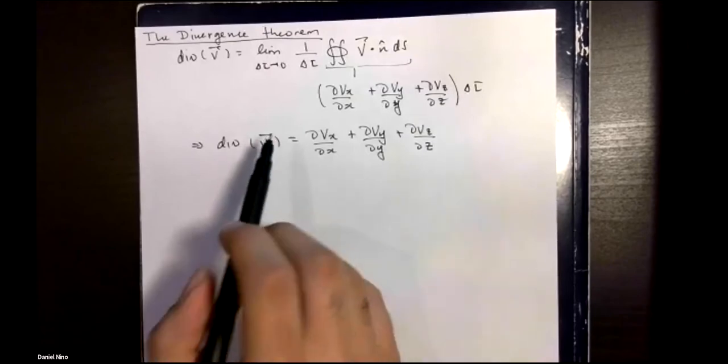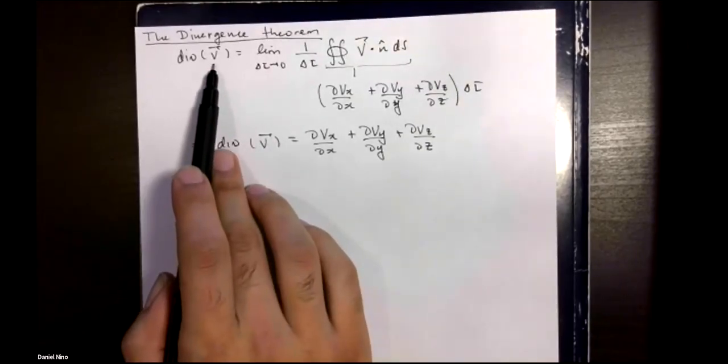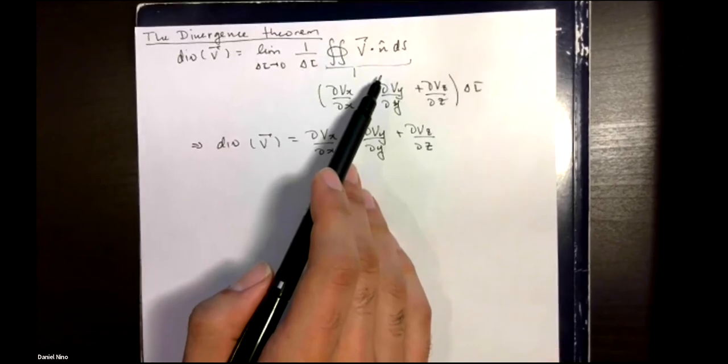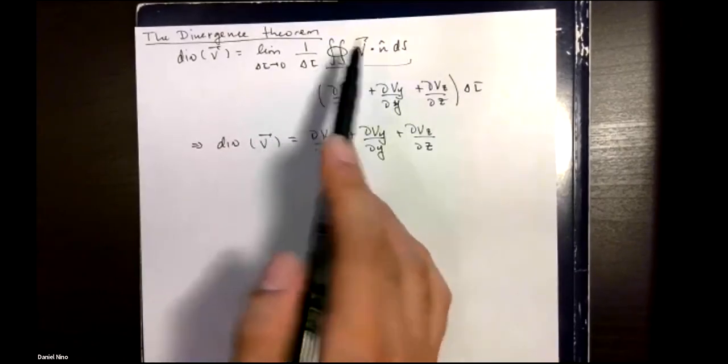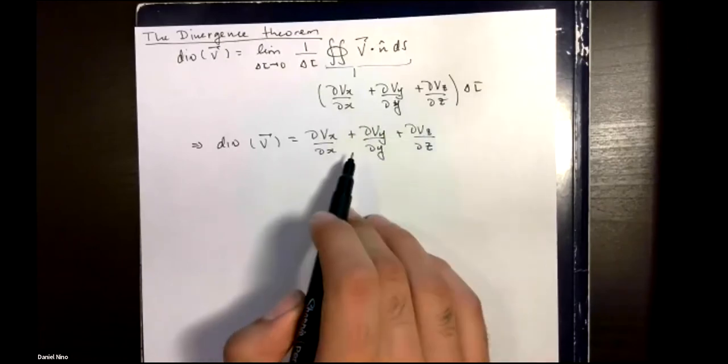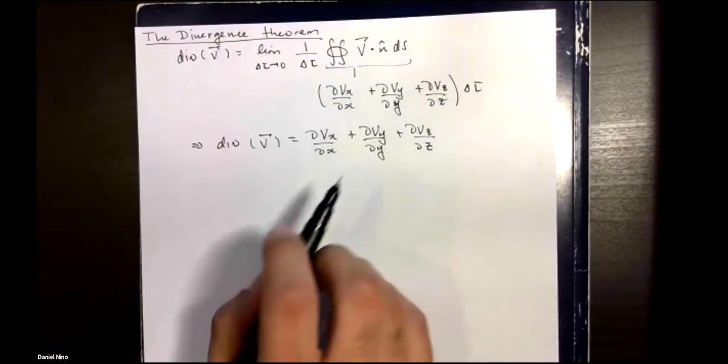So in the last video we found that the divergence of a vector field v, which we defined as the volume density of our flux from a small volume delta tau about some point, could be calculated as the sum of partial derivatives.